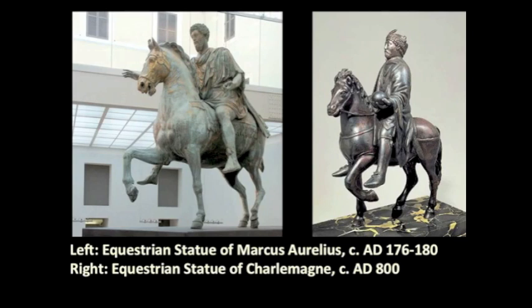One of the few large-scale statues that comes down to us from antiquity is the one on the left-hand side of the screen — that's probably Marcus Aurelius on a horse. There were a lot of large-scale bronze statues in classical antiquity, but most got melted down to make cannons or munitions. This one was thought to be a statue of Constantine for a very long time. Since Constantine was the first Christian emperor, the statue received special treatment and was preserved. But it was actually Marcus Aurelius.